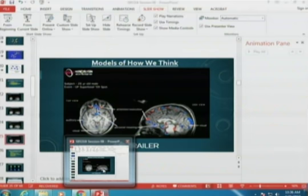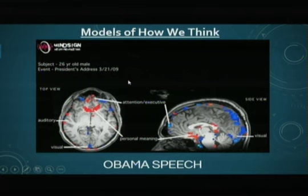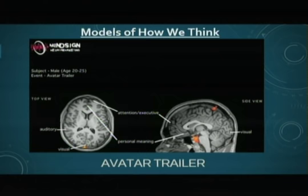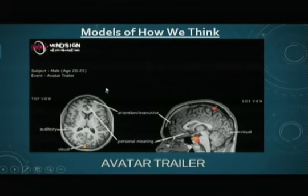Let me remind you that last time we saw some pictures — the trailer for Avatar and an MRI showing brain activity for a 20- to 25-year-old male watching that trailer. This process of taking a trailer or product and watching someone's brain activity is called neuromarketing. It's an up-and-coming field. The assumption is that more brain activity means more interest, and researchers look carefully at activation in areas like personal meaning and executive attention.